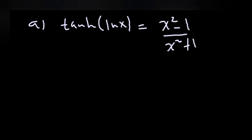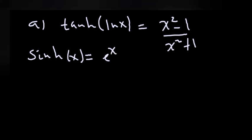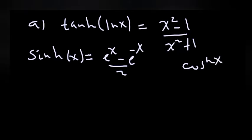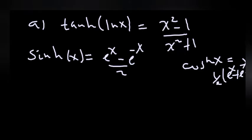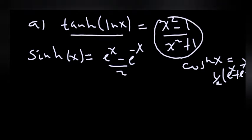This is like a foundational hyperbolic question. Sinh(x) is equal to (e to the power of x minus e to the power of minus x) over 2. And also, cosh(x) is equal to (e to the power of x plus e to the power of minus x) over 2.